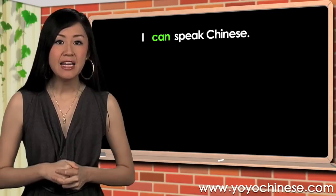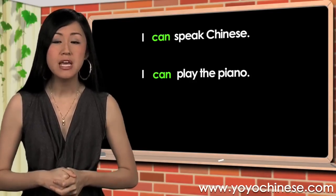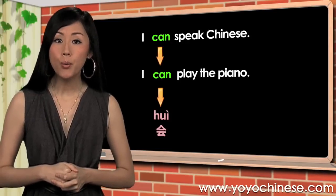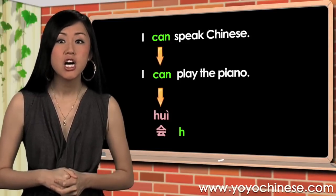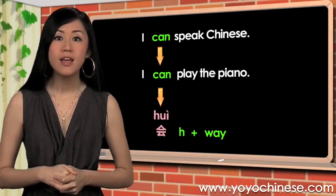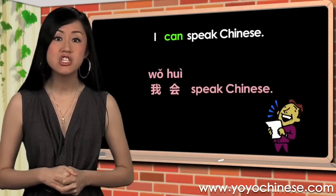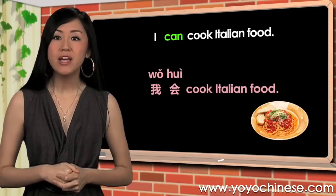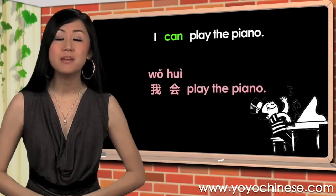'Can' in 'I can speak Chinese' or 'I can play the piano' is 会 (hui), which sounds like 'h' plus 'ui' — hui. For example: 我会 speak Chinese, 我会 cook Italian food, 我会 play the piano.